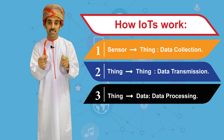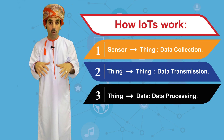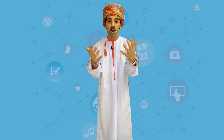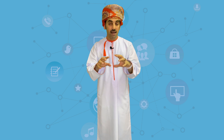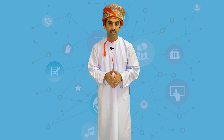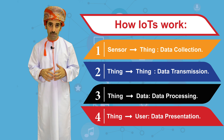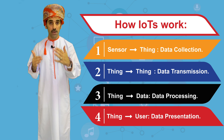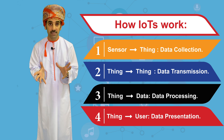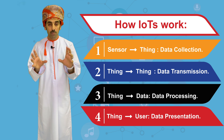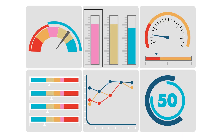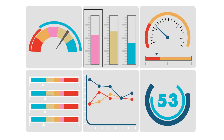Step three is data processing: the thing or the human that receives the data processes it — getting rid of unwanted or garbage data and extracting only the valuable data, using techniques such as artificial intelligence and many other technologies. Step four is data presentation: finally, the valuable data is presented to the user using nice graphs, bar charts, or similar visualizations.